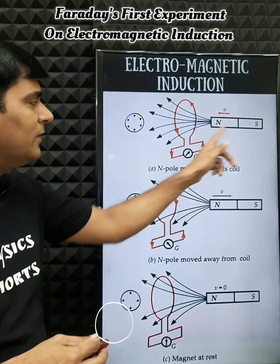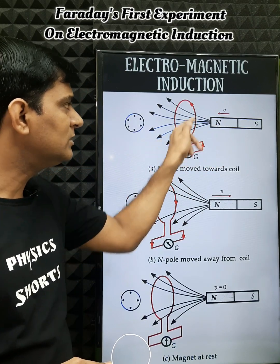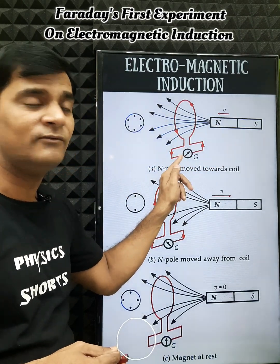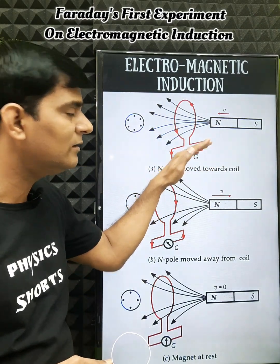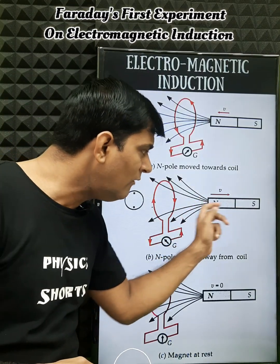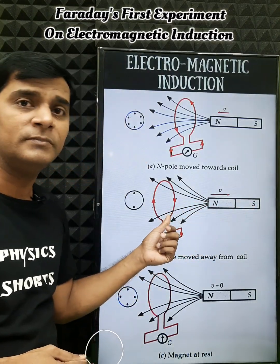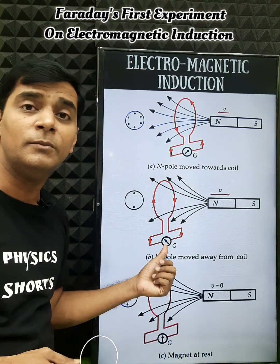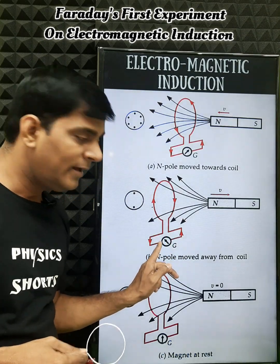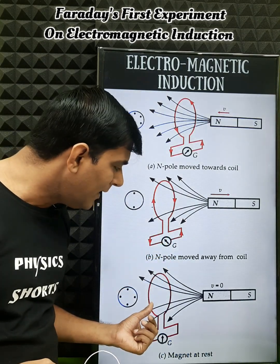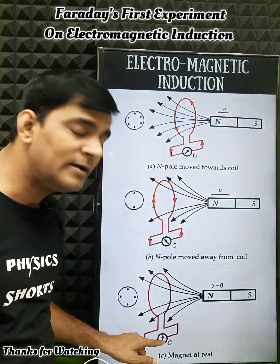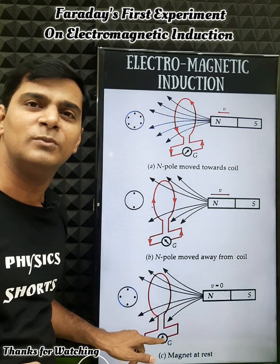When we bring the north pole of the magnet close to the conducting loop, the galvanometer shows deflection — let's say in the right-hand direction. When the magnet moves away from the loop, the galvanometer again shows deflection but in the reverse direction. If the magnet is at rest, the velocity is zero and the deflection in the galvanometer will also be zero.